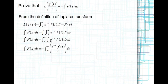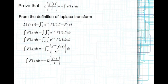We integrate e to the power of minus st with respect to s, and we get e to the power of minus st divided by t, with a negative sign. Bringing the negative sign out, this expression looks like the Laplace transform of f(t)/t. Moving the negative sign completes the proof that the integral of F(s) with respect to s is the Laplace transform of f(t)/t.